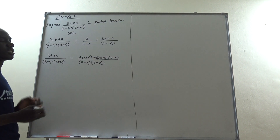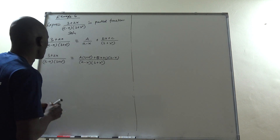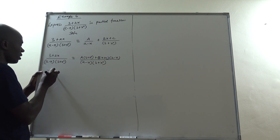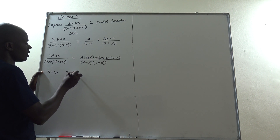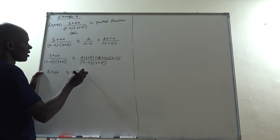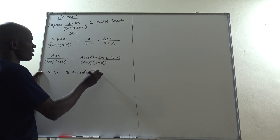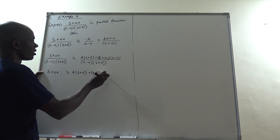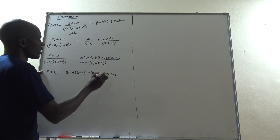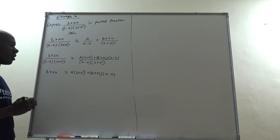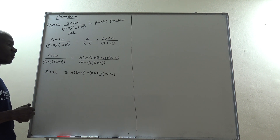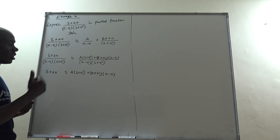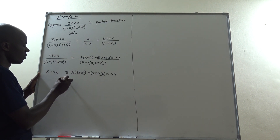Since the denominators are the same we can equate numerators. So 3 + 2x = A(3 + x²) + (Bx + C)(2 − x). Rather than using the cover-up method, we will equate monomials of the same coefficients, but first we need to expand the brackets.